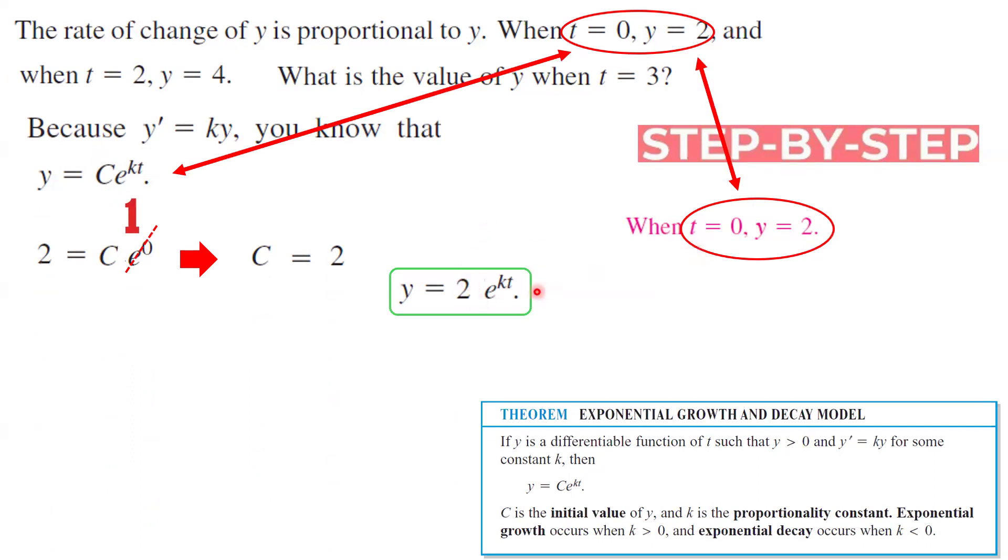In the next step, we need to calculate k because k is another variable. Remember that when t equals 2, y is 4. This is given in the question. So now you just need to plug that into the new mathematical model. We already solved c.